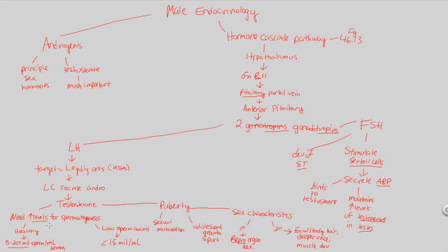How do you make sure that testosterone doesn't flow throughout the body? You make sure that it stays sequestered by ABP within the testes. Finally, FSH also follows a negative feedback loop and is inhibited by a different hormone called inhibin — not hard to remember. Inhibin is a peptide hormone secreted by the Sertoli cells. If the Sertoli cells detect too much FSH, they secrete inhibin to decrease the amount of FSH the anterior pituitary is producing.